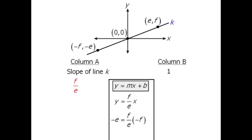And now we'll multiply both sides by e. And at this point, we can conclude that e squared equals f squared.